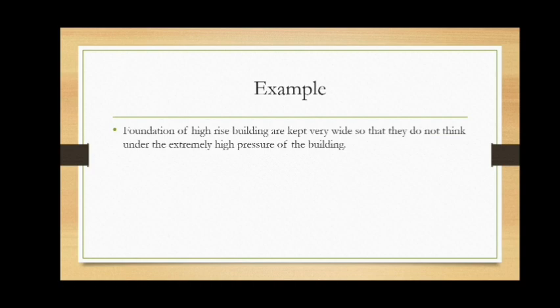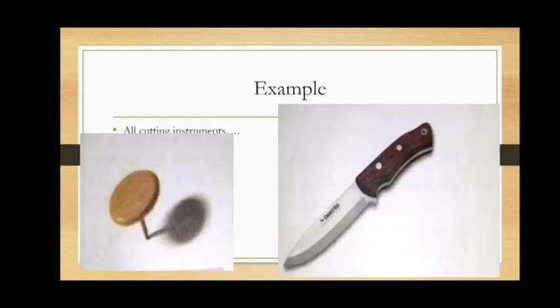The foundations of high-rise buildings are kept very wide so that they do not sink under the extremely high pressure of the buildings — wide means greater cross-sectional area and thus less pressure. Cutting instruments that we use daily, such as knives and blades, are sharpened from the cutting edge. As the cutting edge is sharpened, the area of cross-section decreases and hence the pressure exerted by them increases, so they can easily penetrate a given surface.